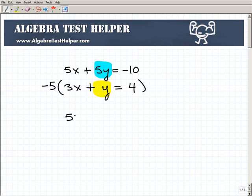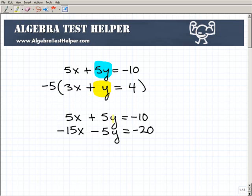So this is going to be our first equation, 5x plus 5y equals negative 10. And our second equation is going to be, I have to multiply everything by negative 5. So this will be negative 15x minus 5y, and this will be negative 20. All right, so now we're in good shape because now I have opposites.